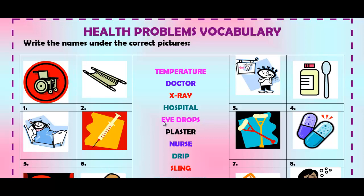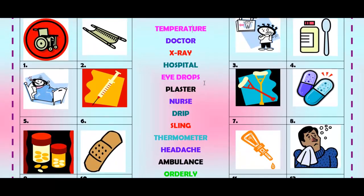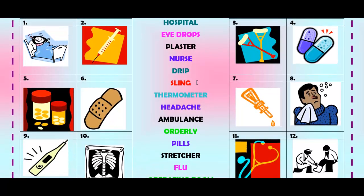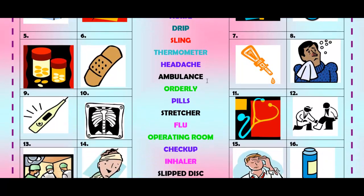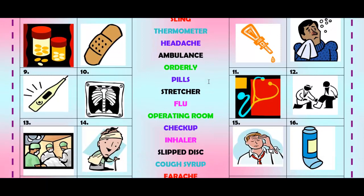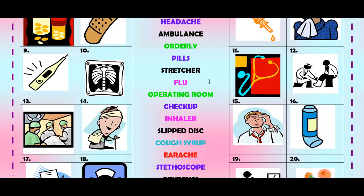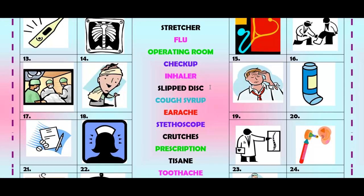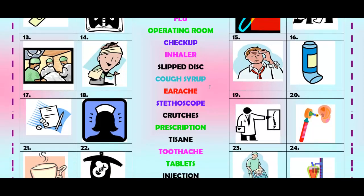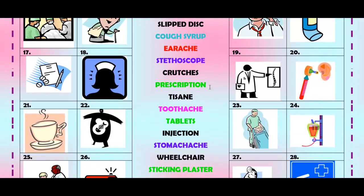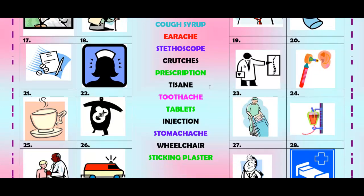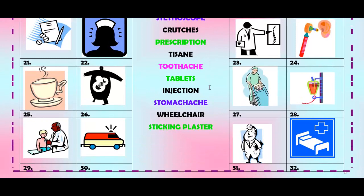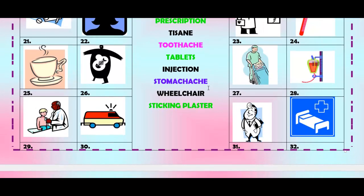You have here the pictures and the words in the middle. The words include: temperature, doctor, x-ray, hospital, eye drops, plaster, nurse, drip, sling, thermometer, headache, ambulance, orderly, pills, stretcher, flu, operating room, checkup, inhaler, slipped disc, cough syrup, earache, stethoscope, crutches, prescription, tisane, toothache, tablets, injection, stomachache, and wheelchair.